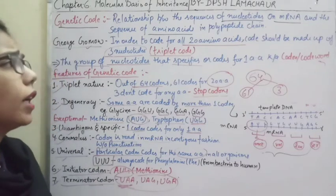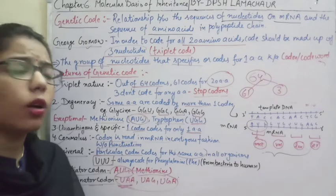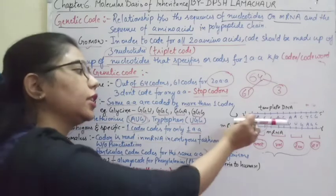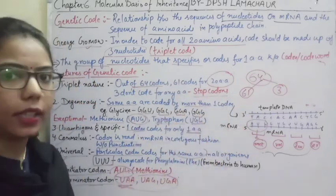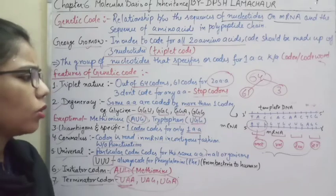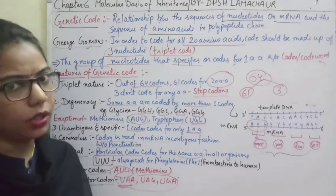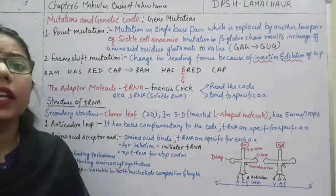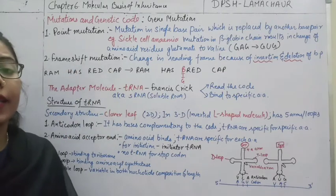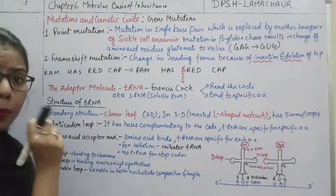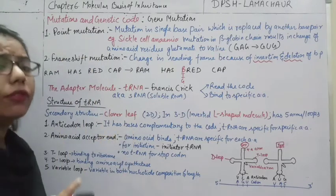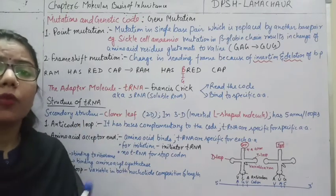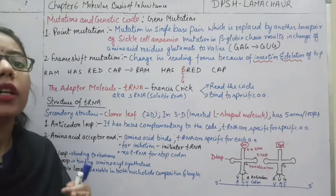Here we have completed the salient features of the genetic code. Now we will understand how they are useful and what will happen if there is a change in any of the nucleotides in this mRNA. So let's start with another topic — mutation.